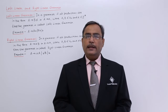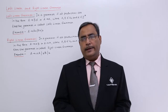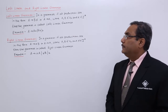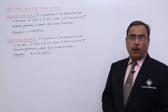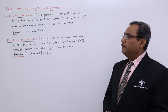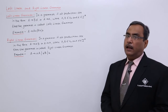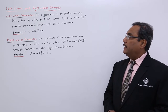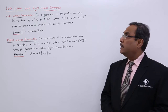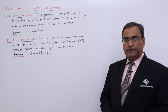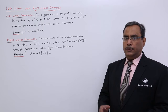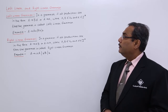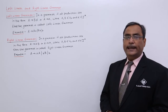Let us discuss left linear grammar and right linear grammar with proper examples. In a grammar, if all the productions are in the form A produces capital B alpha, or A produces alpha, where capital A and capital B are non-terminals and alpha belongs to sigma star — meaning alpha consists of input alphabets or input symbols and can also be null — then the grammar is called left linear grammar.